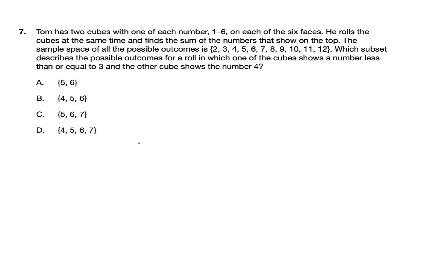Tom has two cubes with one of each number 1 to 6 on each of the six faces. He rolls the cubes at the same time and finds the sum of the numbers that show on the top. The sample space of all the possible outcomes is 2, 3, 4 all the way to 12. This question is very wordy and very confusing. It's actually a statistics and probability question.